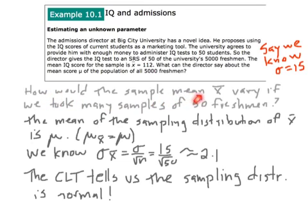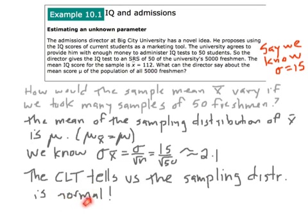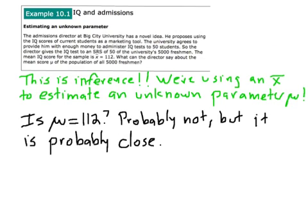How would the sample mean x-bar vary if we took many, many samples of 50 freshmen? This is based on chapter 9 and sampling distributions. We know the mean of the sampling distribution is mu, and the standard deviation of the sampling distribution — here's the formula from last chapter — works out to about 2.1. The mean of x-bar is going to be mu, but we don't know what mu is. We do know that 2.1 is the standard deviation of the sampling distribution. And we know the sampling distribution is normal because of the central limit theorem — our sample size is 50, which is more than 30.